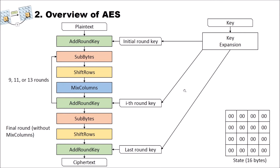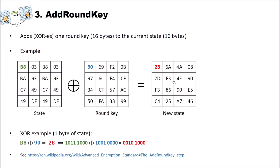The first building block is add round key. It's quite simple: it adds one round key to the current state array by XORing the round key with the current state. The round keys are 16-byte round keys, and the current state is always 16 bytes. Here's an example: we have an example state with hexadecimal numbers taken from an actual AES implementation in CrypTool 2. The state gets XORed with the round key array, and we get a new state.